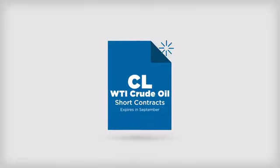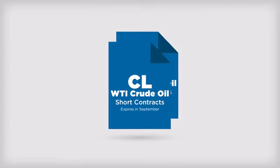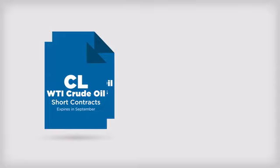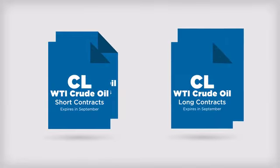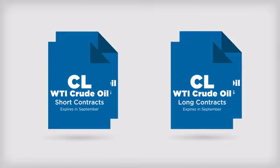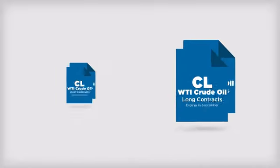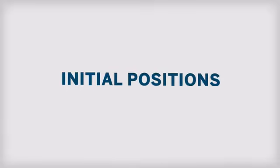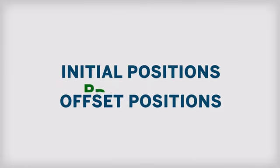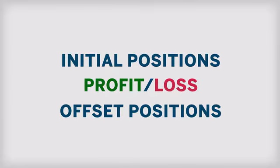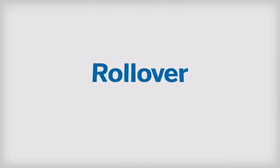For example, a trader who is short two contracts of WTI crude oil expiring in September will need to buy two contracts of WTI crude oil expiring on the same date. The difference in price between his initial positions and the offset positions will represent the profit or loss on the trade.